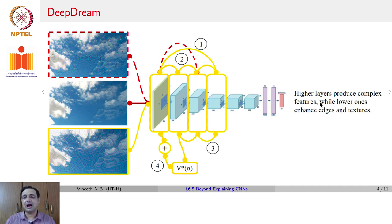You would see that higher layers produce more complex features, while lower ones enhance the edges and the textures. You can even see that example in these two images here. This top red one was created from a slightly earlier layer. And this yellow bordered one here was constructed by a slightly later layer.